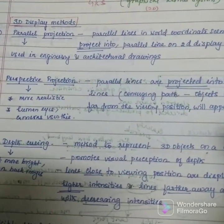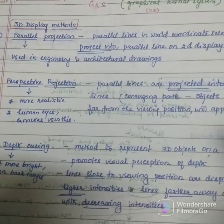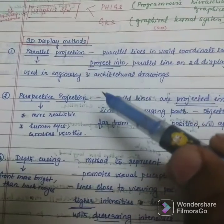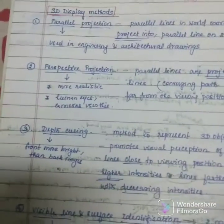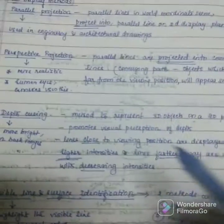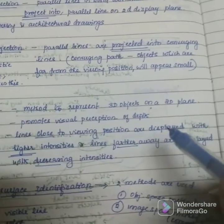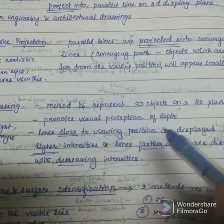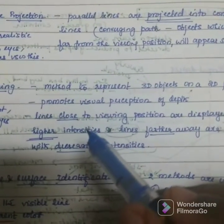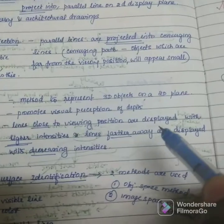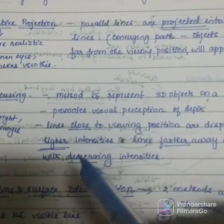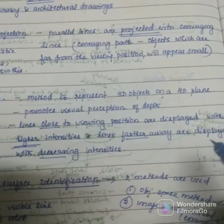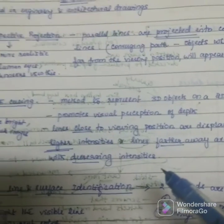You can refer to my previous lecture, lecture 13, for an overview about parallel and perspective projection for more details. The third one is depth queuing. It is a method to represent 3D objects on a 2D plane. It promotes visual perception of depth — lines close to the viewing position are displayed with higher intensities and lines farther away are displayed with decreasing intensities.